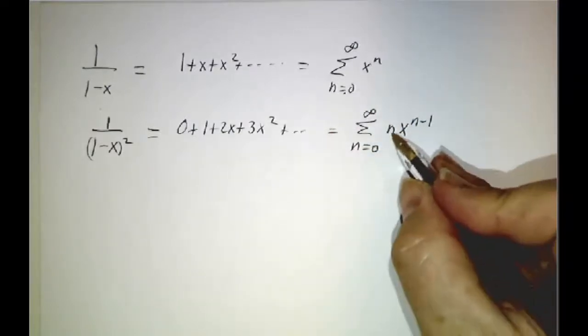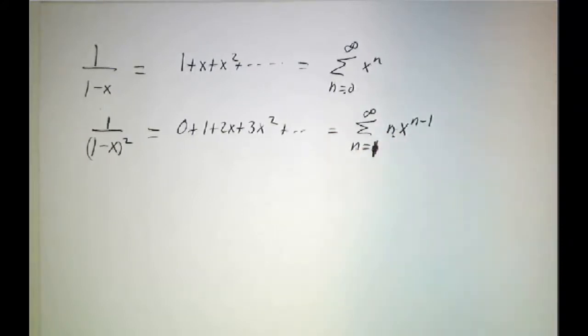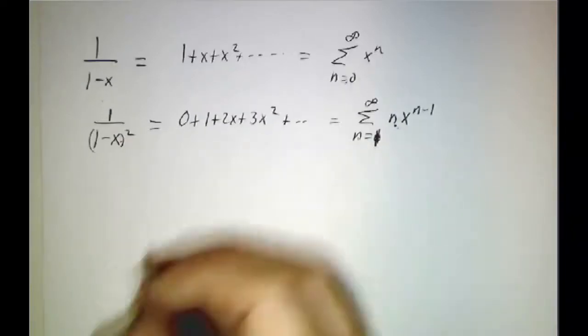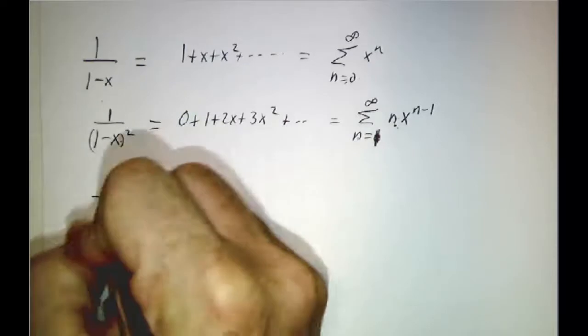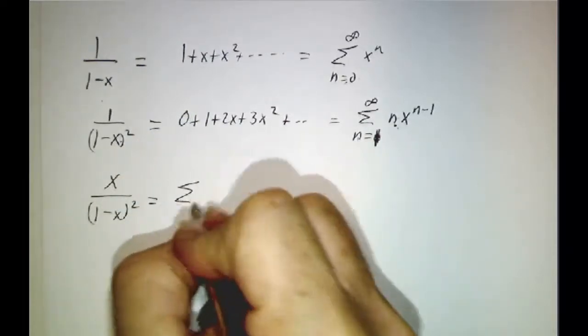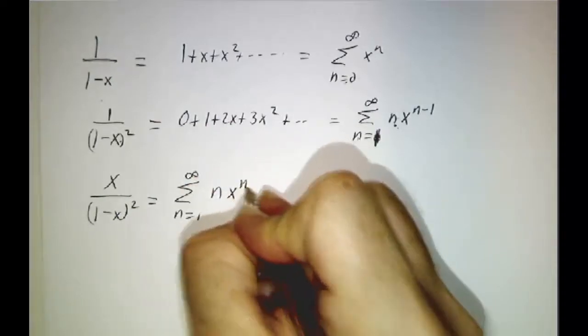And of course, n equals 0 doesn't contribute so we might as well start our sum at 1. And then if you multiply both sides by x, you get that x over 1 minus x squared is the sum as n goes from 1 to infinity of nx to the n.